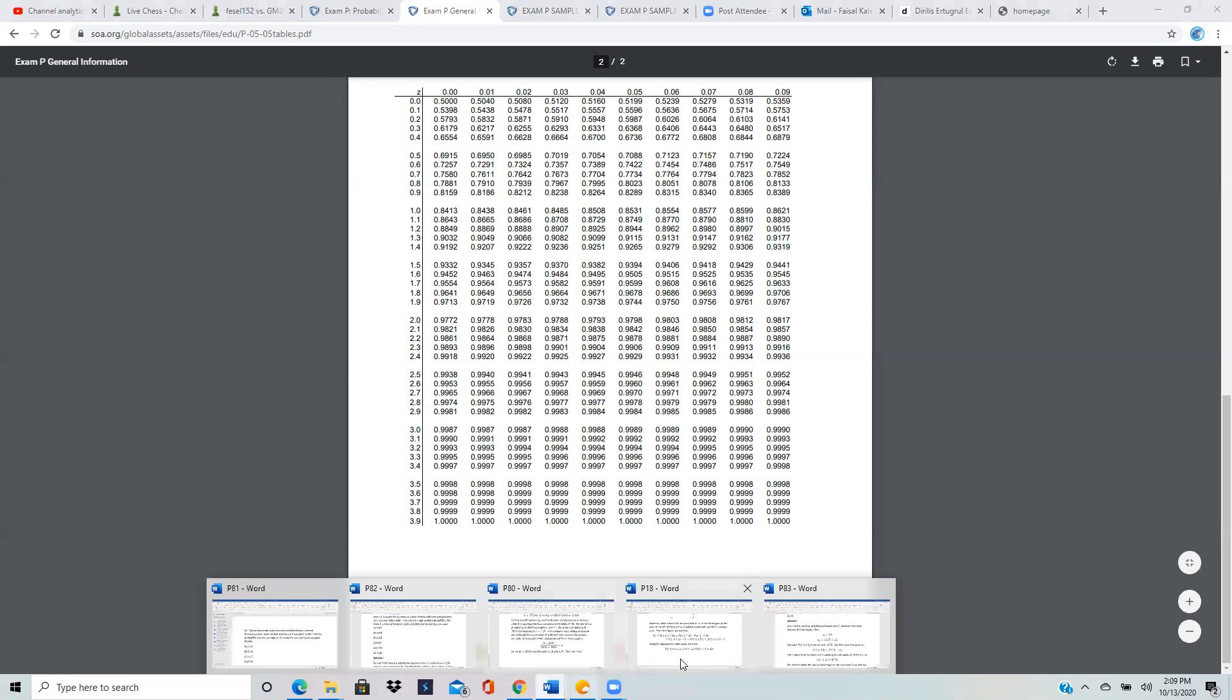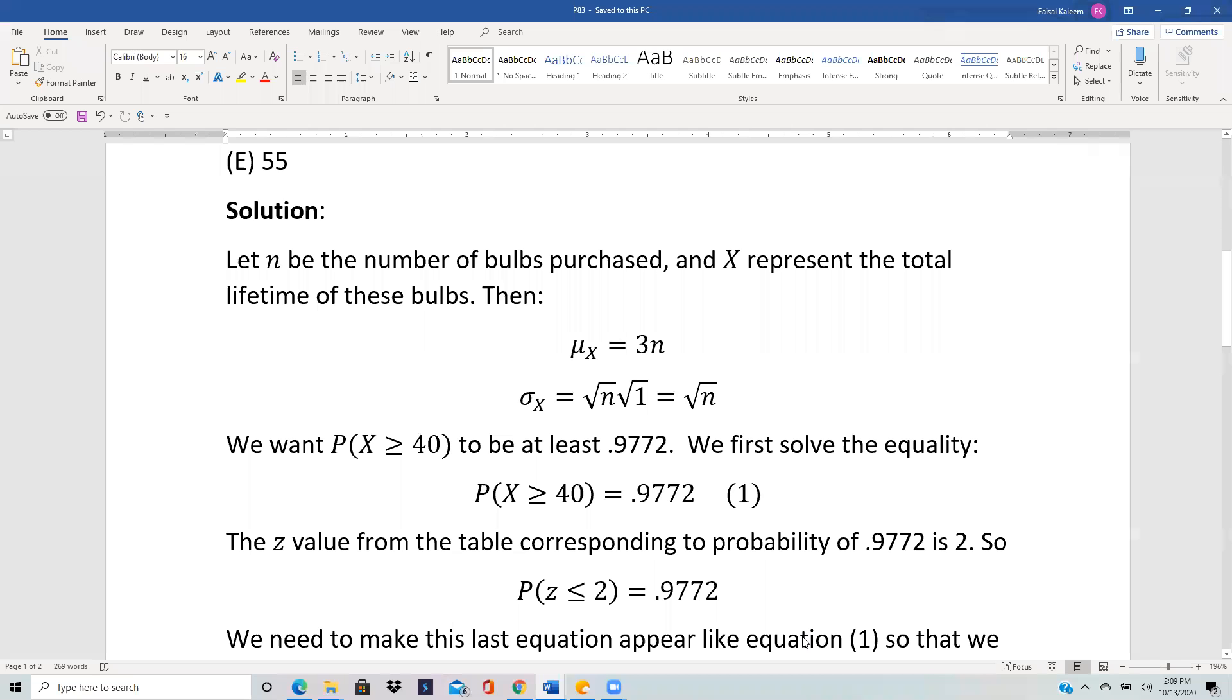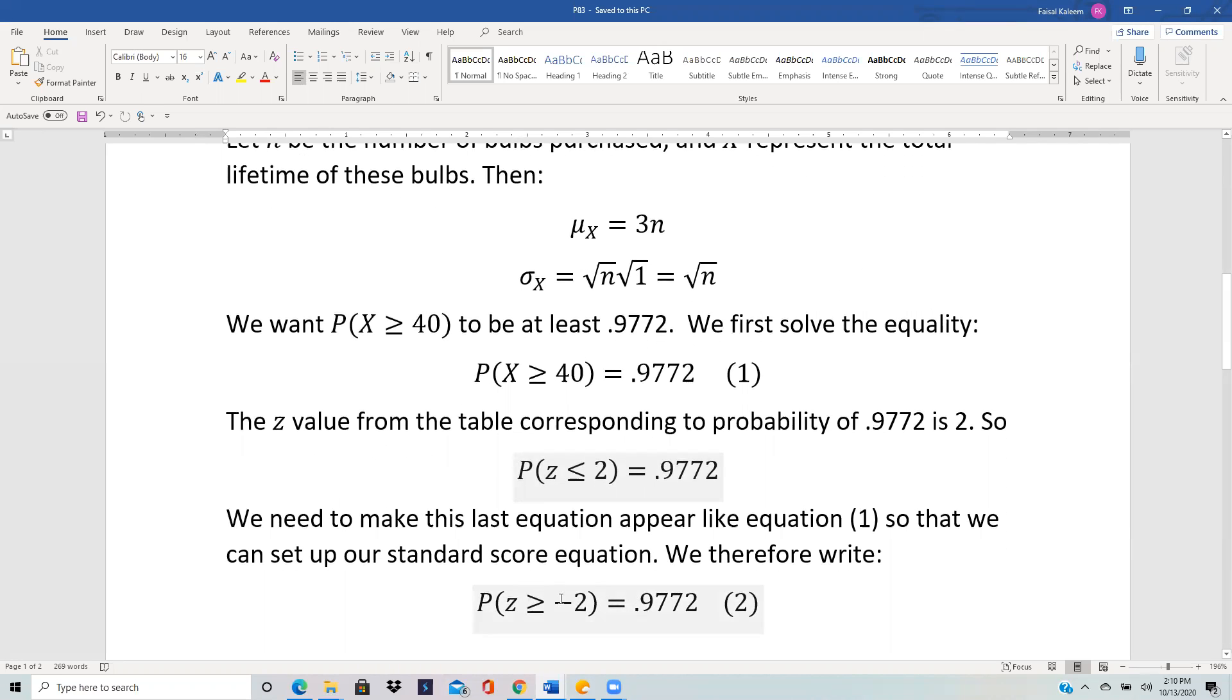If we remember the table goes for less than, so that means P(z ≤ 2) = 0.9772. We want to make this equation match exactly with z in place of X. Right now the inequality is going the wrong way, so we want to keep this number and have the inequality going the same way. z ≤ 2 is the same as P(z ≥ -2) because of symmetry.